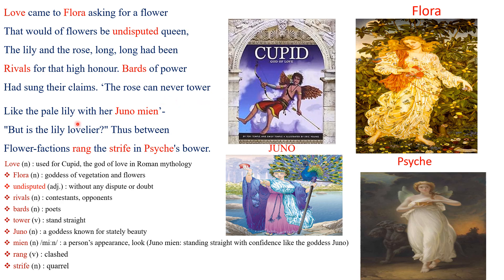The rose can never tower like the pale lily in Juno's mean — that is, Juno's look or bearing. So a rose cannot be as tall, straight, and splendid as a lily, and a lily cannot be as lovely as a rose. The lily is sacred to Juno, the Roman goddess and wife of Jupiter, while the rose is associated with the princess Psyche.